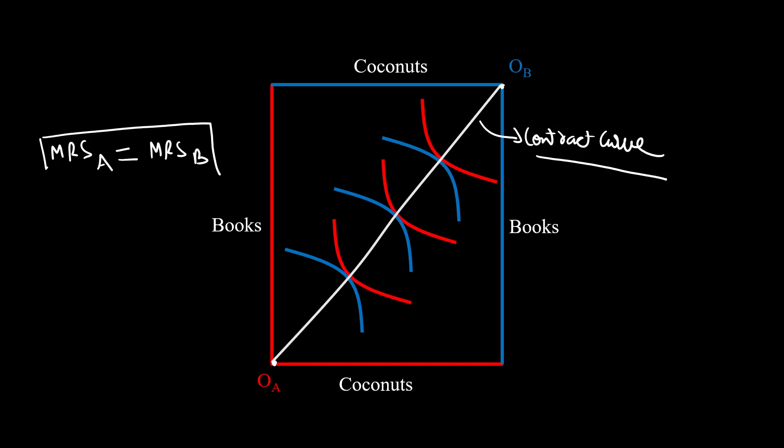So, MRS of A is equal to MRS of B. And this is your Pareto efficiency condition. In fact, we can even use these to solve for the contract curve. And I might do that in a later video.